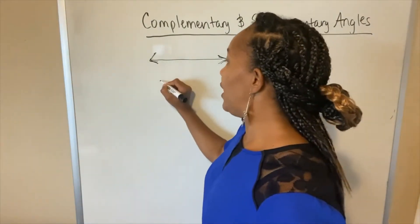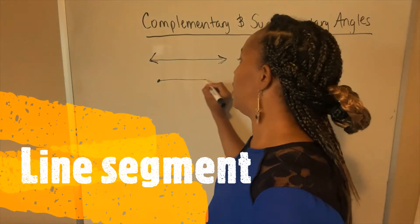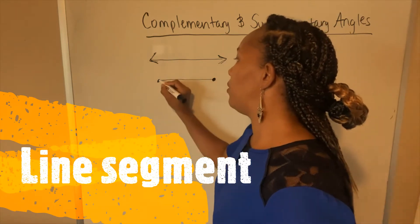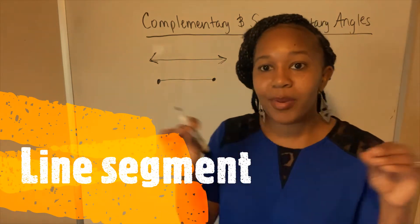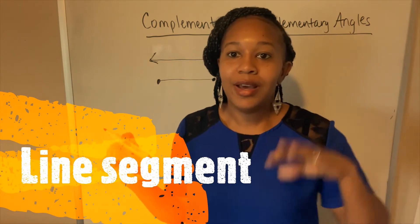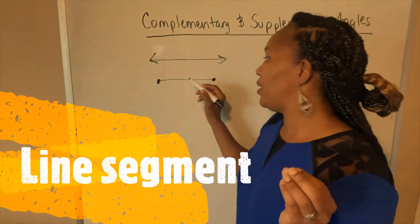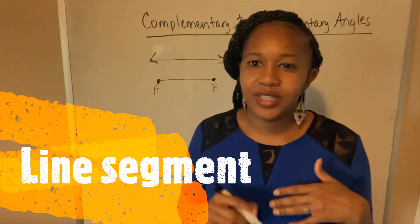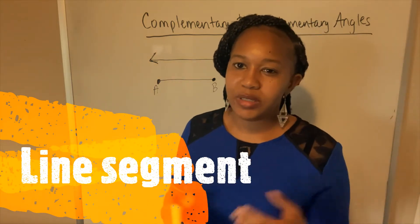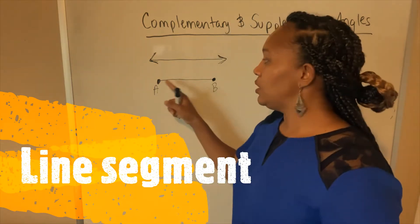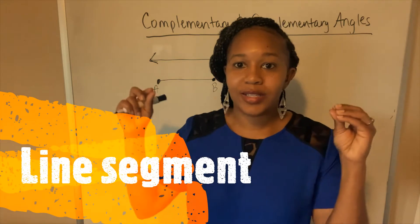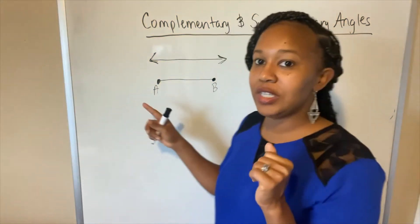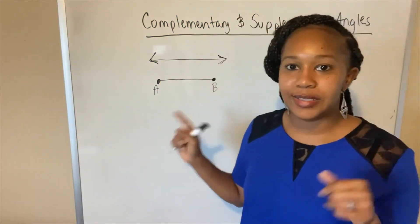Then you have a line segment. A line segment does not continue on in both directions. It's a line that cuts off at two points. It cuts off at a point here, and we usually call these A, B, or different letters — those points are defined by a letter. So a line segment actually ends at two points and doesn't continue on. That's the difference between a line and a line segment.